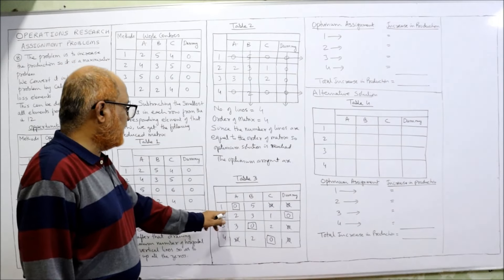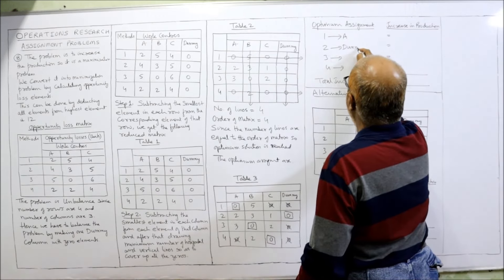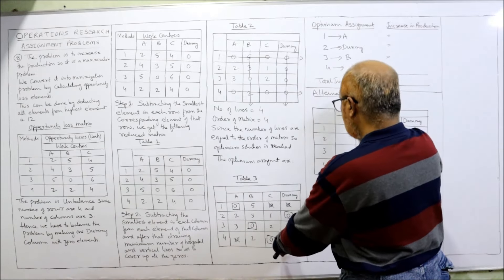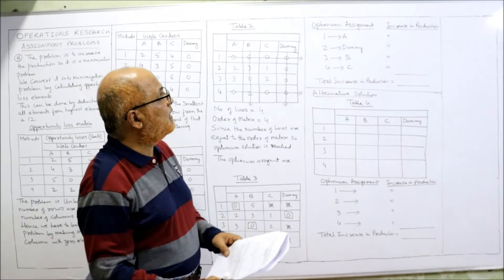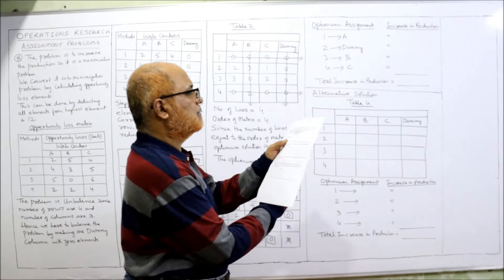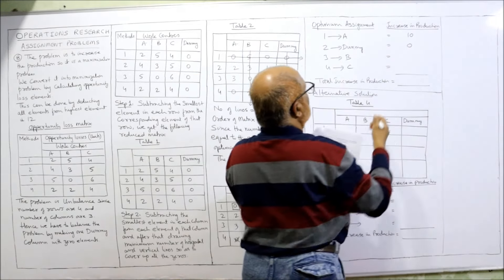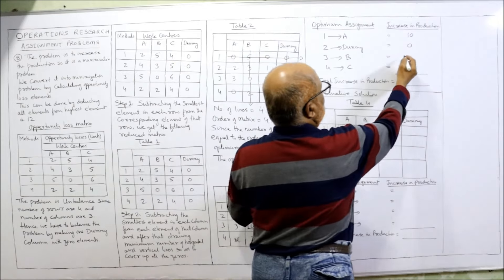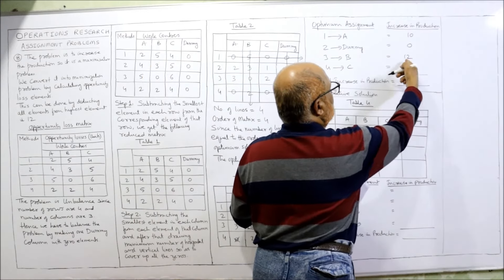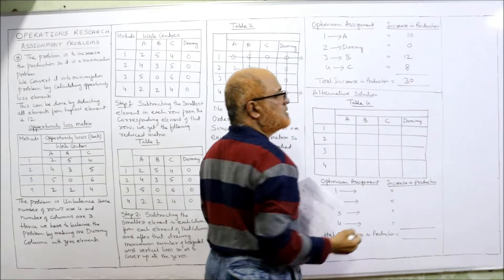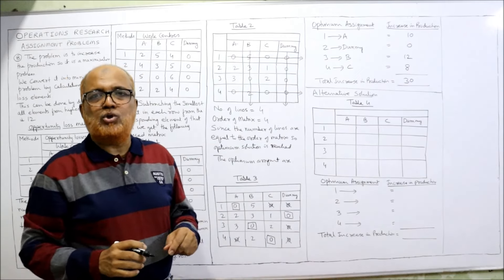The optimum assignment is: method 1 to A, method 2 to dummy, method 3 to B, and method 4 to C. Looking at the original production values: 1 to A gives 10, 2 to dummy gives 0, 3 to B gives 12, and 4 to C gives 8. So the maximum increase in production is 10 + 0 + 12 + 8 = 30. First solution completed.